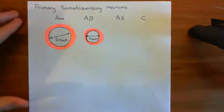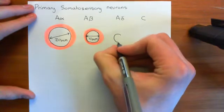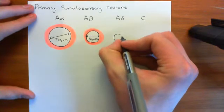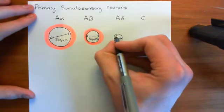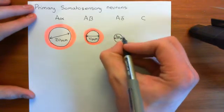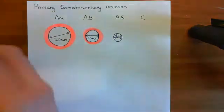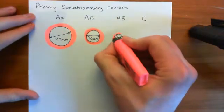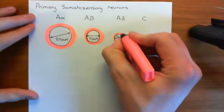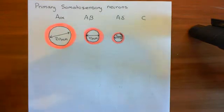Next up, A-delta. A-delta halves again — their diameter goes down to around 5 micrometres. They will also be covered by a myelin sheath, so they'll have Schwann cells around them which will produce a myelin covering.